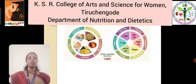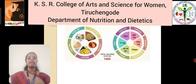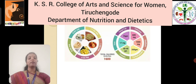For dietary management, a low energy, low carbohydrate, moderate protein, low fat, moderate sodium and high fiber diet is recommended for patients suffering from diabetes mellitus. The calories required per day is 1600 kilocalories, carbohydrate about 250 grams per day, and protein about 40 to 45 grams per day.